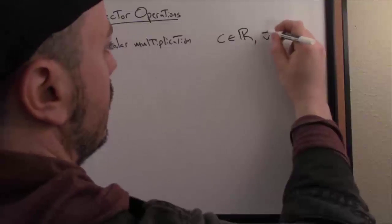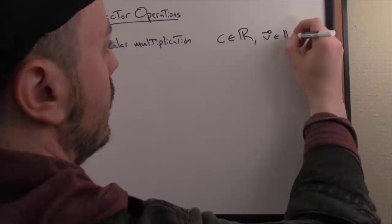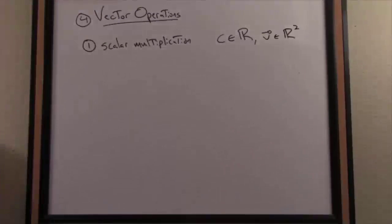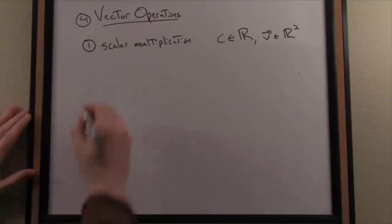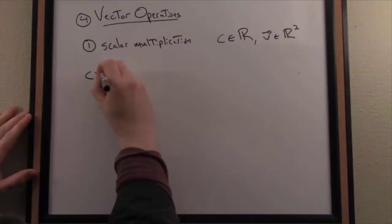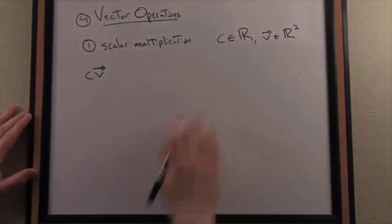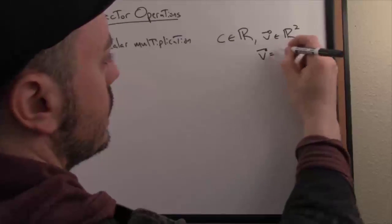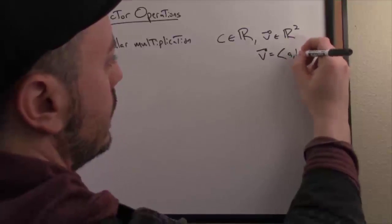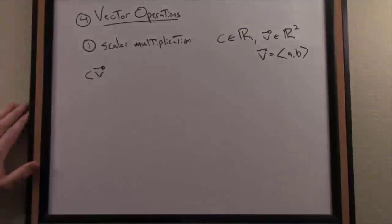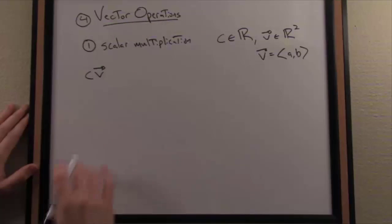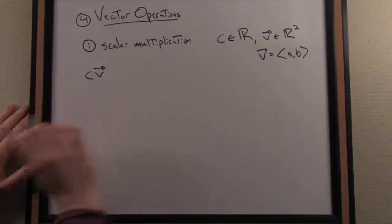And of course, we know a vector is an entity that has dimension. So we'll say our vector, for instance, lives in R2. So with scalar multiplication, what you do is you operate on a scalar and a vector together. It's a binary operation. And it's typically written like this. Just to be complete, let's say our vector consists of components A and B in that order.